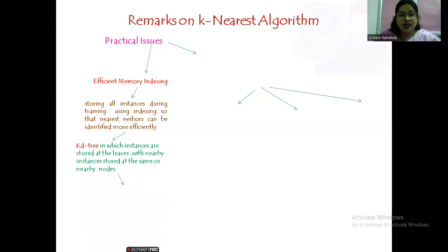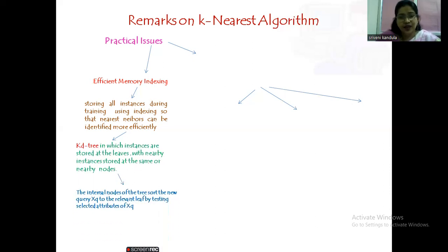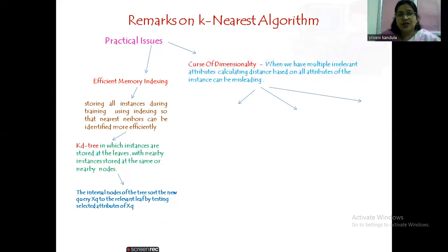The solution for efficient memory indexing is the KD-tree. Instances are stored at the leaves, since accessing leaves is easy, and nearby instances are stored at the same or nearby nodes. For example, with k=3, the first three values are stored at the center for easy access. Internal nodes are stored in sorted fashion, so when a new query x_q arrives, navigating to the relevant tree leaf is fast. This allows efficient memory indexing.